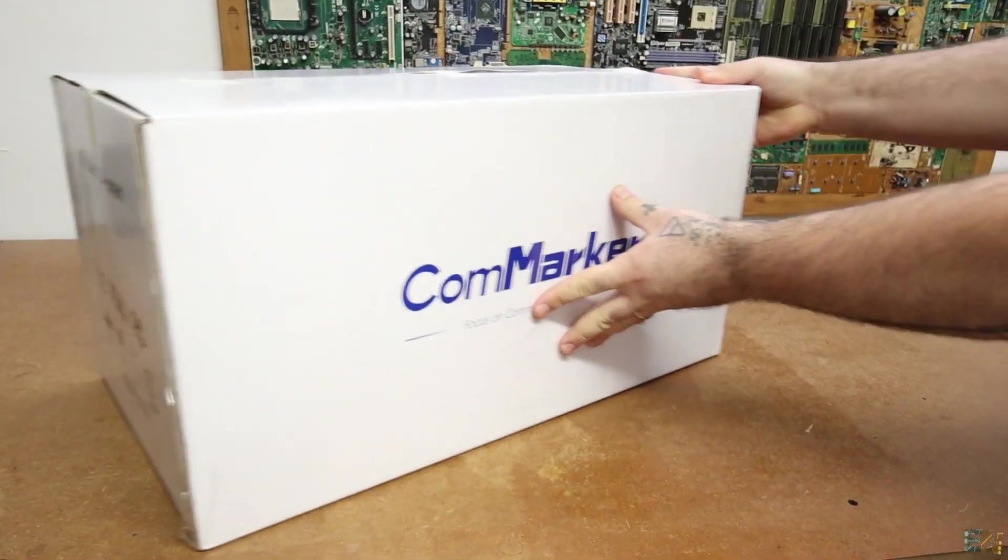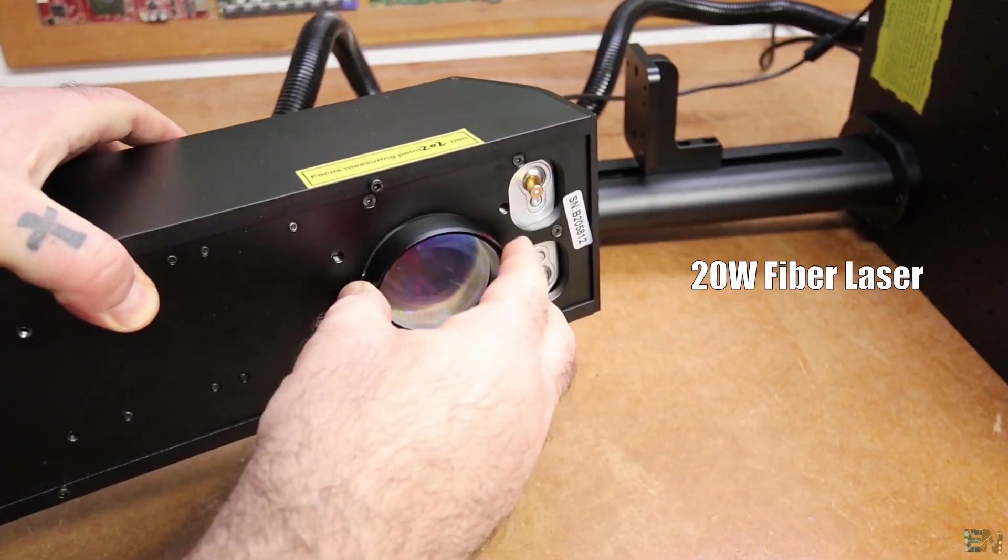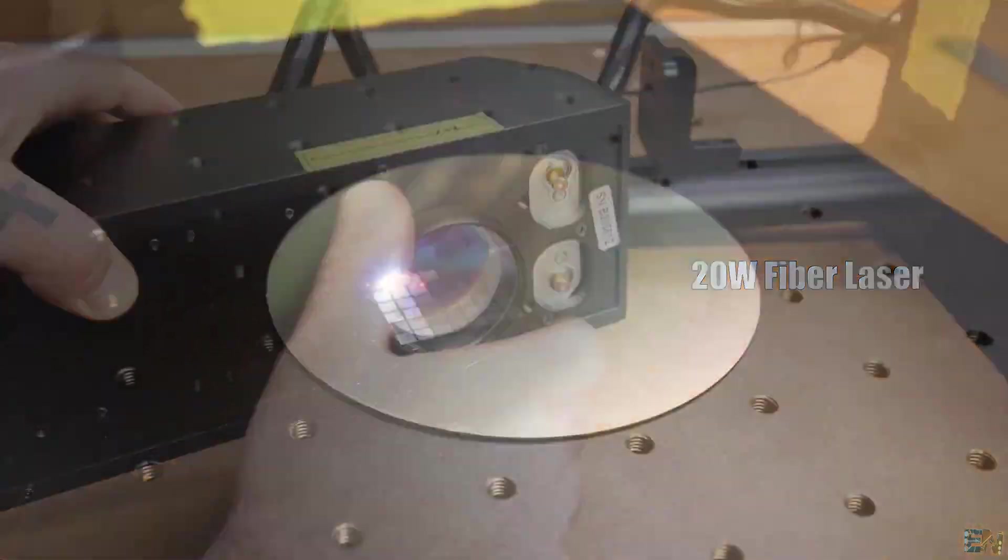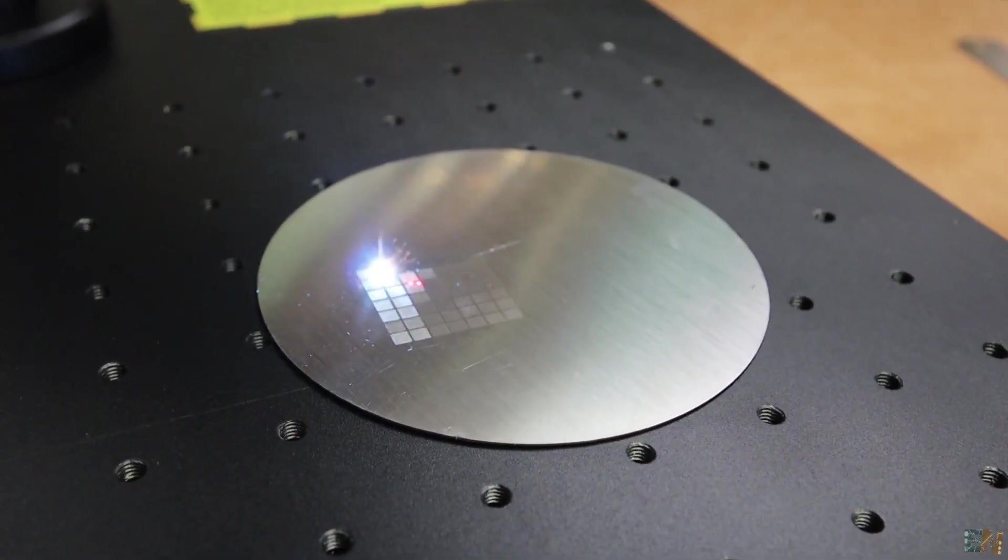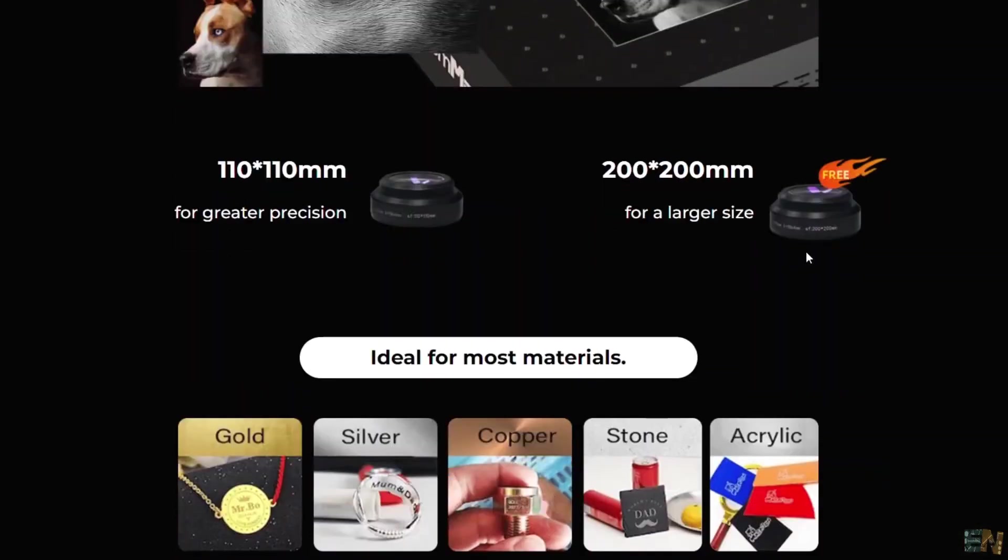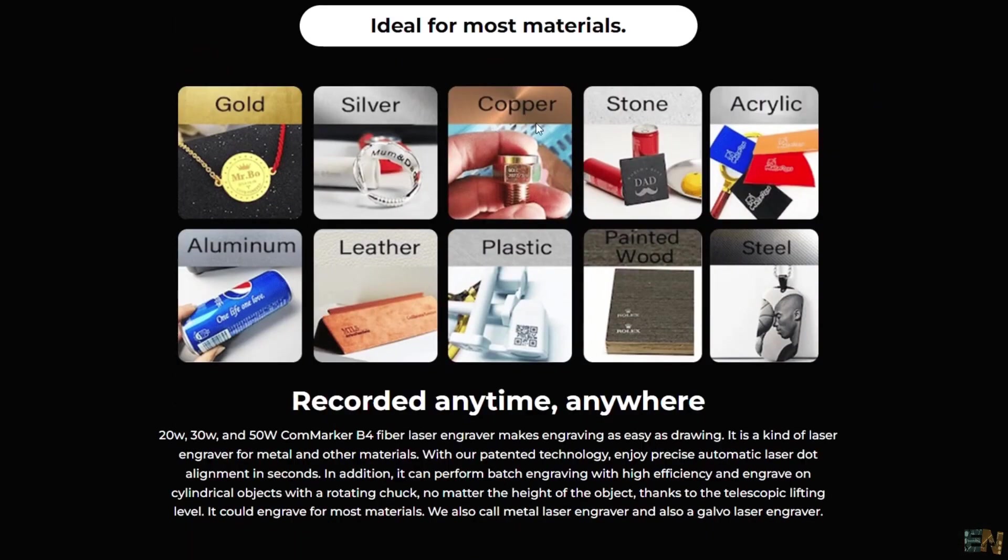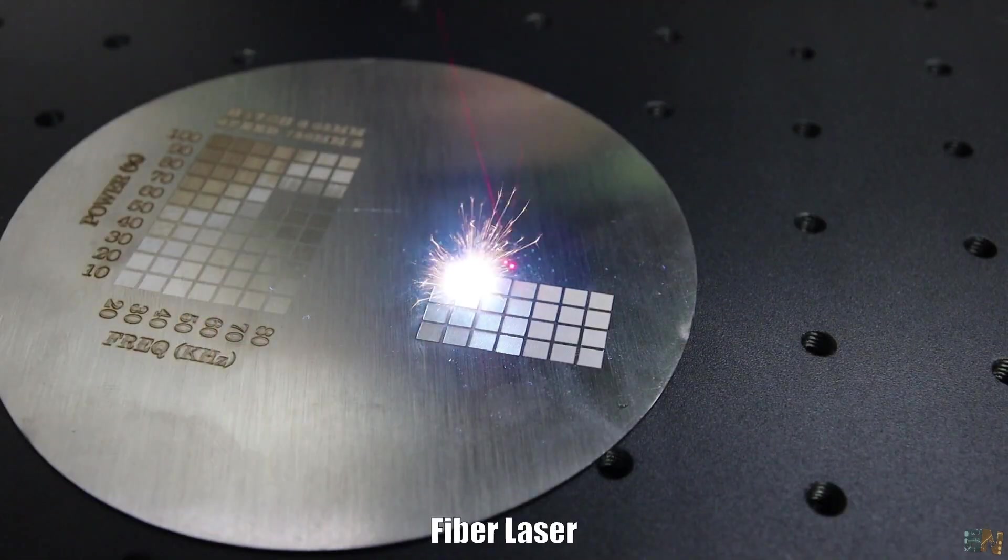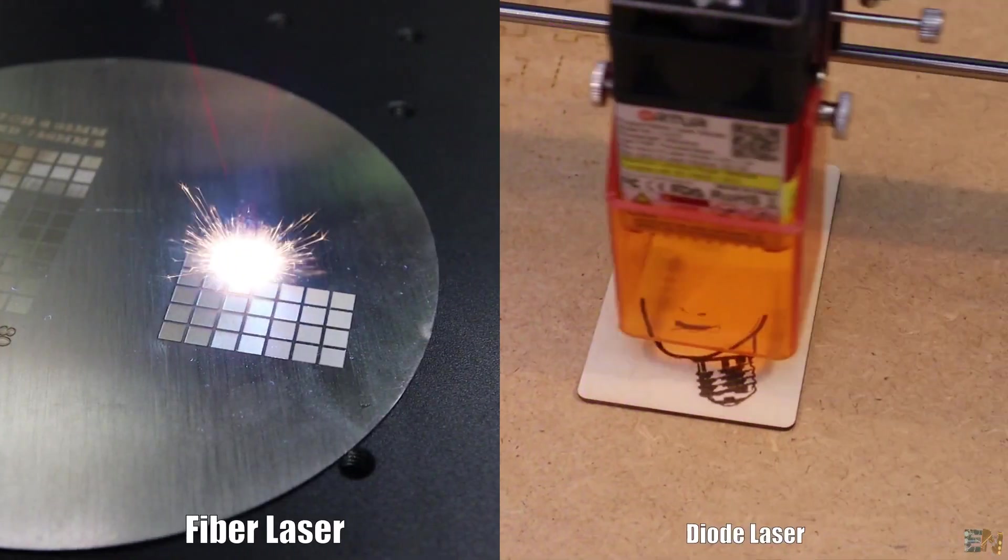So this is the ComMarker B4, a 20 Watts fiber laser, and we use this to engrave on materials such as metal, plastic, acrylic and leather, stone, gold, and even silver. It's not working well for wood, paper, or any organic material in general as we usually do with my previous diode laser engravers.